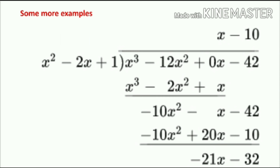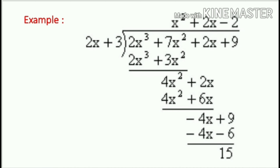Here is one more example for you using the same steps. In this case the dividend is x³ - 12x² + 0x - 42. The 0x term is written to maintain the decreasing degree order: powers 3, 2, 1, 0. When dividing by 2x + 3, the quotient is x² + 2x - 2 and the remainder is 15. You can verify using p(x) = g(x) × q(x) + r(x).